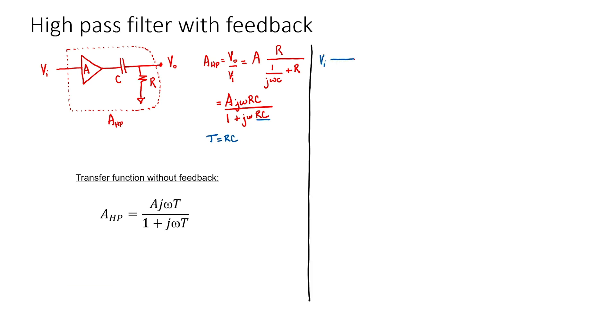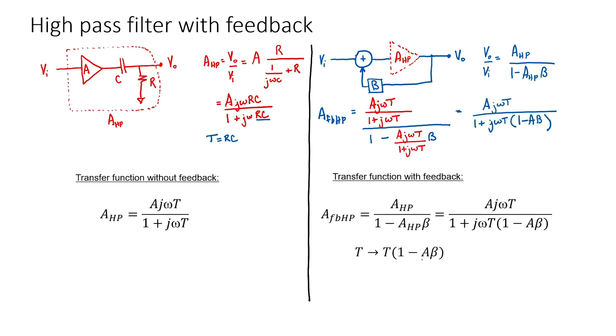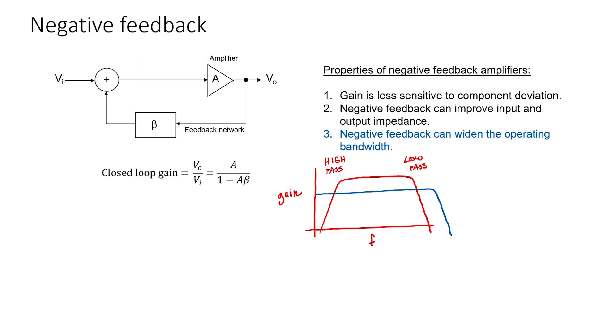Let's now put this filter into a feedback network and see what happens to the pole. We already know the formula for the gain of this feedback circuit. Let's call that gain AFBHP. We've now found this transfer function with feedback. Because A beta is a negative number, T is increased. This means that the frequency is reduced. We can see that we've sacrificed gain in order to widen the operating bandwidth of this particular amplifier. That happens when the feedback is negative.